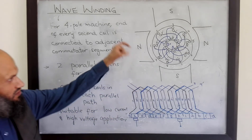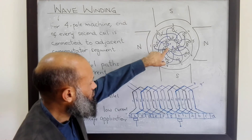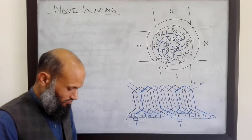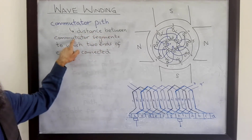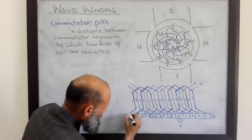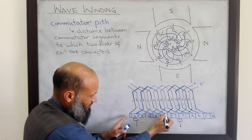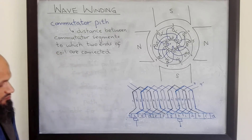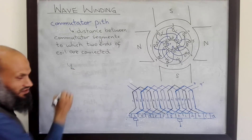We are left with only one question: how did I decide that if coil one is connected to A, then one-dash should be connected to F? To clarify it, we define some terminology. We define commutator pitch. Commutator pitch is the distance between the commutator segments to which the two ends of the coil are connected. For example, for this particular machine, one end of this coil is connected to A and the second end is connected to F. What is the distance between these commutator segments? 1, 2, 3, 4, 5 — so commutator pitch for this machine is 5.